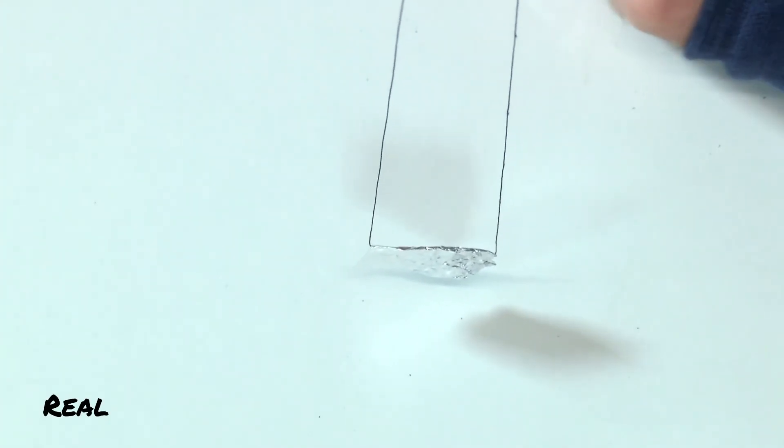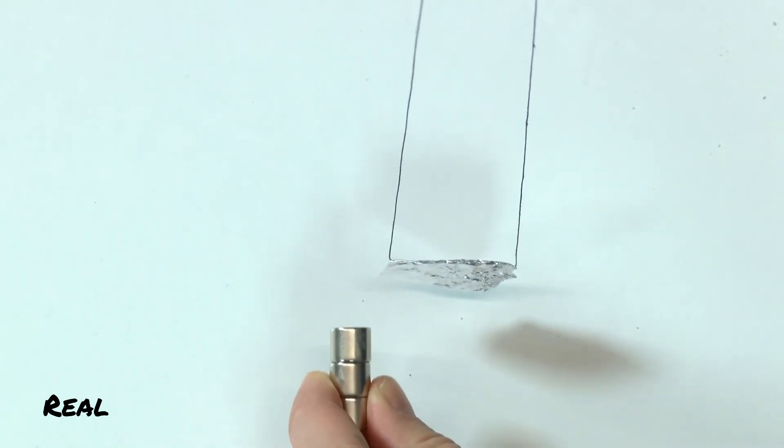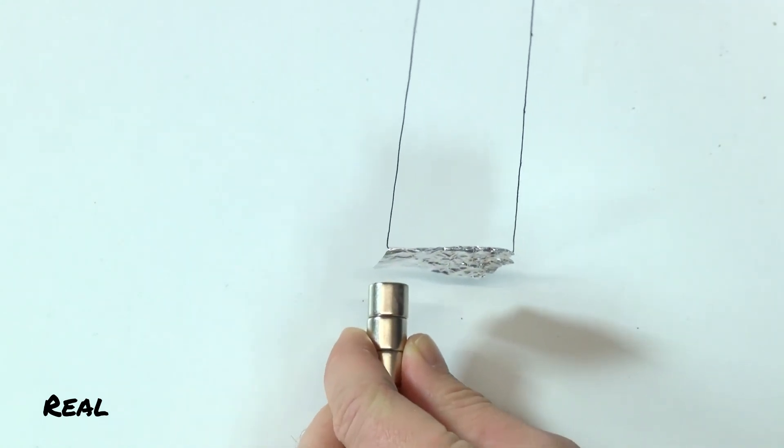However, if you keep the neodymium magnets at a constant, very small distance from the aluminum foil, it will be attracted by the magnets.